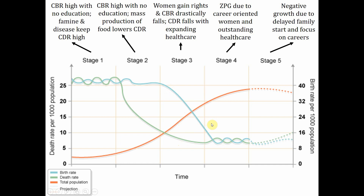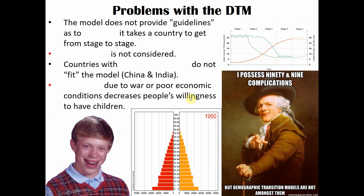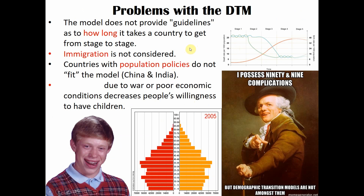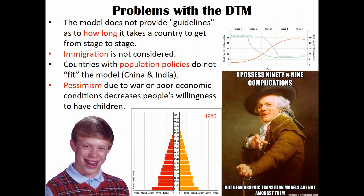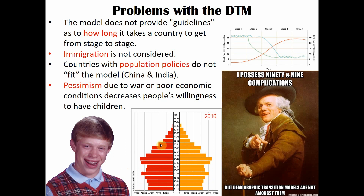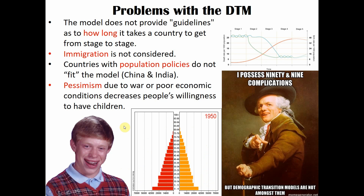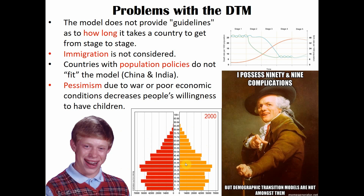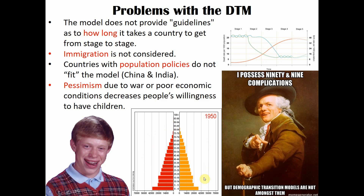All of these together make up the demographic transition model. As a country moves through different stages, different variables play a role - women getting rights, industrialization, breakthroughs in medicine - and all of these changes will make the population shift up or down. Now, there are problems with the DTM: it never tells you how long it takes to progress through stages, it doesn't consider immigration, and it doesn't have a good answer for countries like China or India with severe population problems. It also can't account for economic downturns or war. But here's Japan's population pyramid going through all the stages - you can see those kids born in 1950 getting older, going from a stage 2 to a stage 5 country right before your eyes. If you can identify the shapes and know the causes behind them, that will be very helpful on the AP exam.